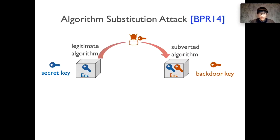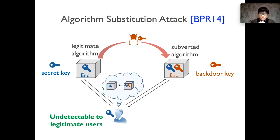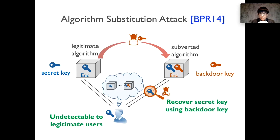Young and Yung's idea was really prescient, and since then it has attracted renewed attention from the research community. At Crypto 2014, Bellare, Patterson, and Rogaway formalized a new notion called algorithm substitution attack, defined broadly against symmetric encryption. In this attack model, the encryption algorithm is replaced by an altered version embedded with a backdoor key created by the adversary. Such a substitution is said to be undetectable if a detector who knows the secret key cannot distinguish the legitimate algorithm from the subverted one in black-box testing.